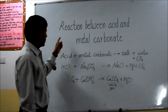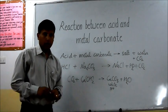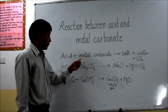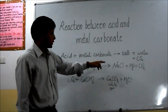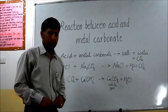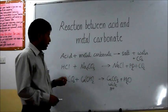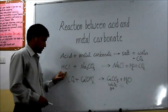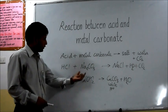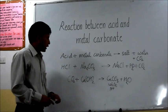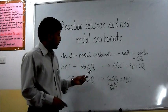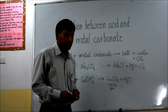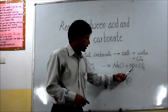Let me explain the reaction between acid and metal carbonate. As acid reacts with metal carbonate, the products are salt, water, and carbon dioxide. When we use hydrochloric acid with the metal carbonate sodium carbonate, the products are sodium chloride as the salt, water, and carbon dioxide.